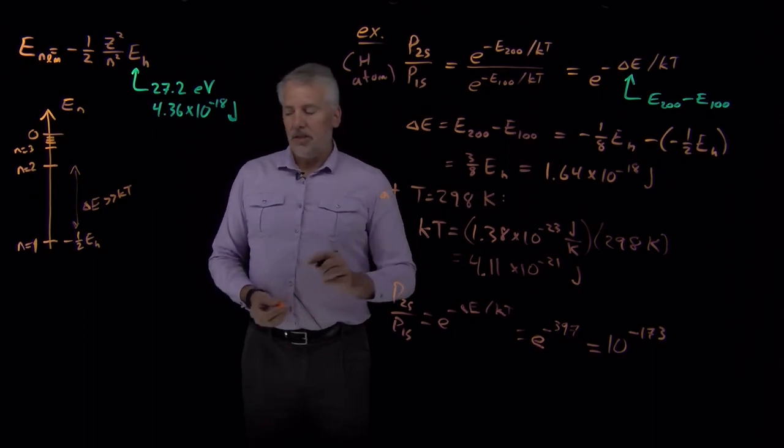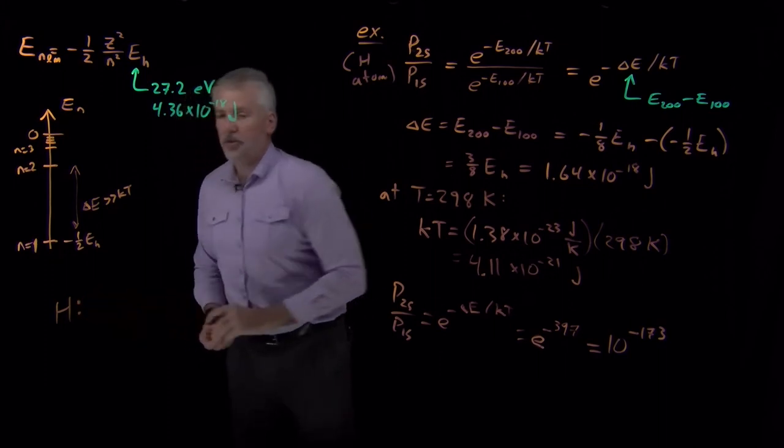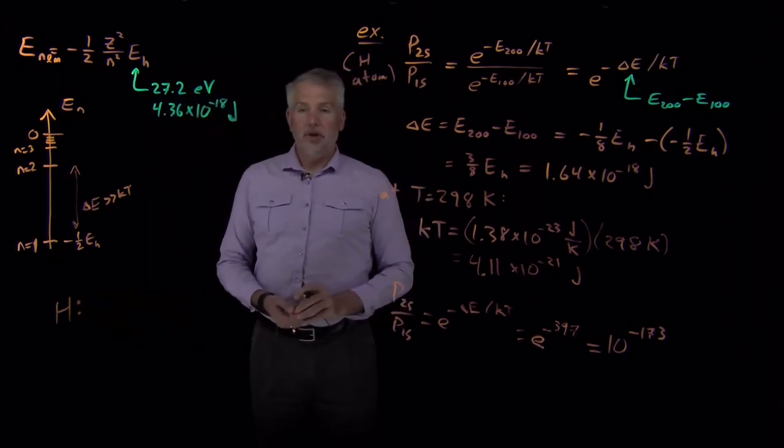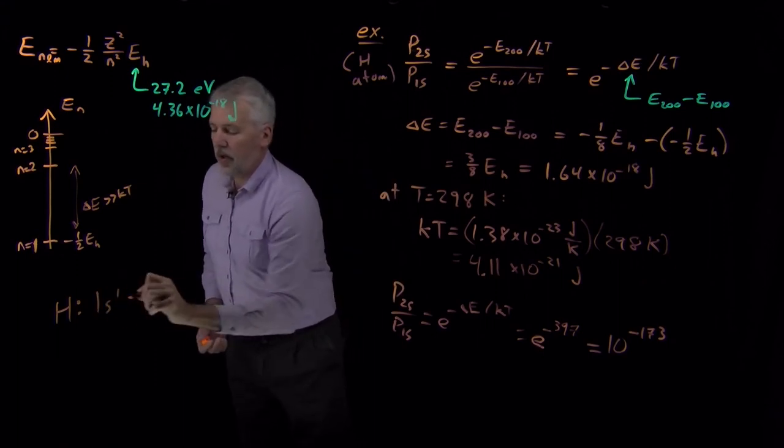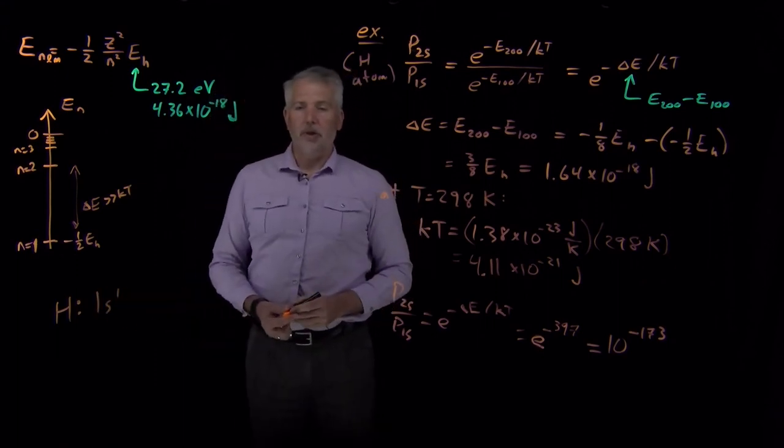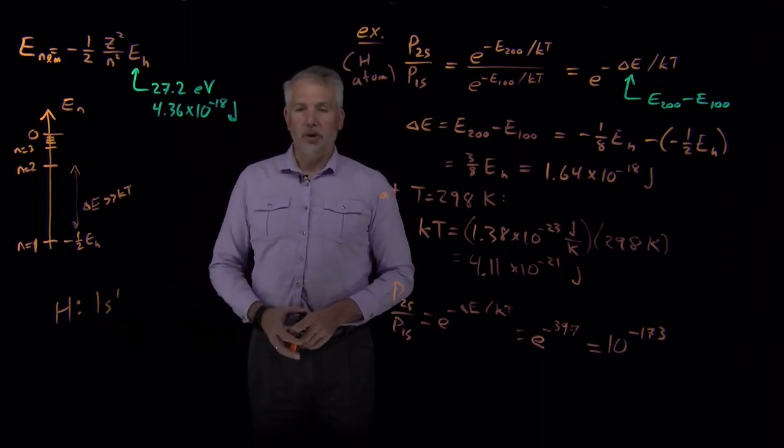What that means is that's the reason why, for example, in general chemistry, if I asked you to tell me the electron configuration for a hydrogen atom, you would say hydrogen is a 1s1 electron configuration. The single electron in a hydrogen atom is found in the 1s orbital.